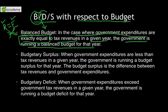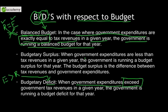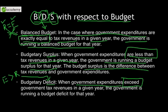The second term is deficit. Budgetary deficit is when the government expenditure exceeds the government revenues — something is short, something is less. That is a budgetary deficit situation. And lastly, S for surplus — budgetary surplus. When the government expenditures are less than revenues in a given year, the government is running a budget surplus. The budget surplus is the difference between tax revenues and government expenditures. Remember these three through the mnemonic BDS: balanced, deficit, and surplus.